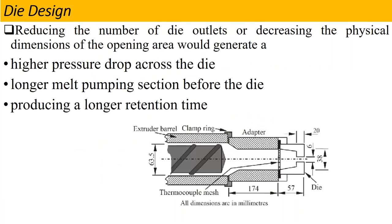The next parameter after screw design is the die design. After the metering section, the die is installed. The die design significantly affects our extrusion process. Reducing the number of die outlets or decreasing the physical dimensions of the opening area would generate a higher pressure drop across the die.